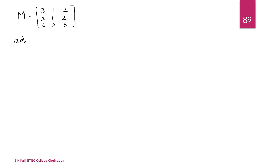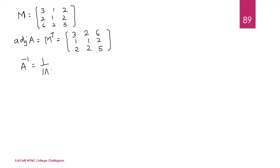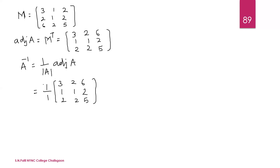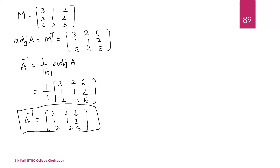The adjoint of A is the transpose of the cofactor matrix. Taking the transpose, rows become columns: first column 3, 2, 6; second column 1, 1, 2; third column 2, 2, 5. Therefore A inverse equals 1 upon determinant into adjoint of A, which is 1 upon 1 into the matrix with rows 3, 2, 6 and 1, 1, 2 and 2, 2, 5. Since 1 upon 1 is 1, A inverse equals the matrix 3, 2, 6; 1, 1, 2; 2, 2, 5. This is the required inverse of the given matrix by the adjoint method.